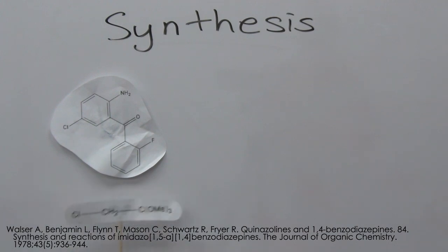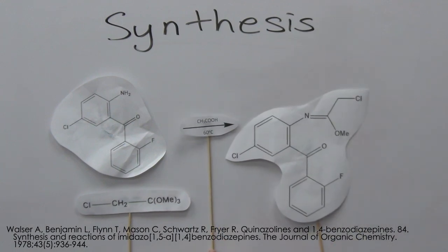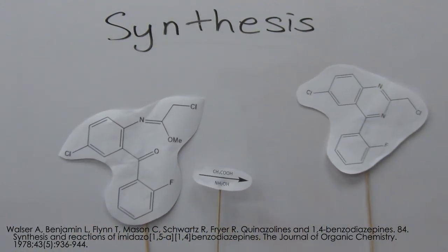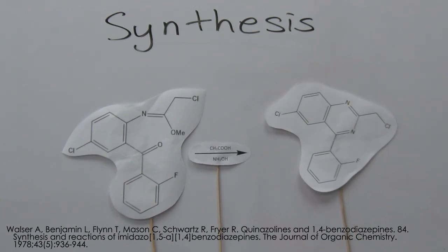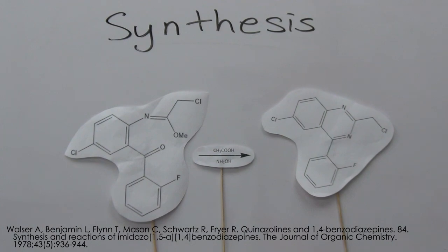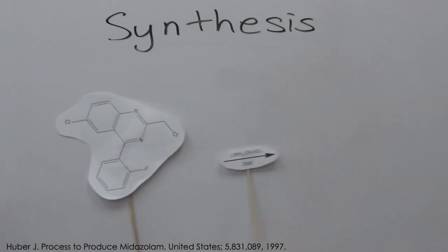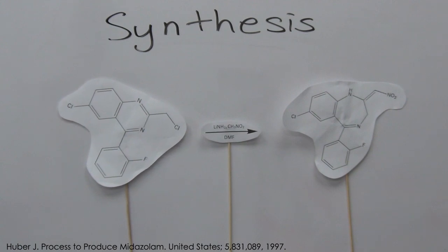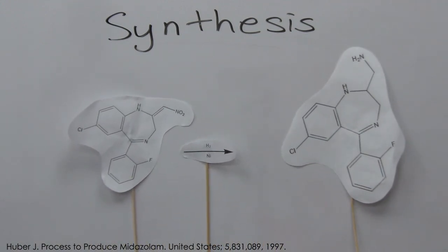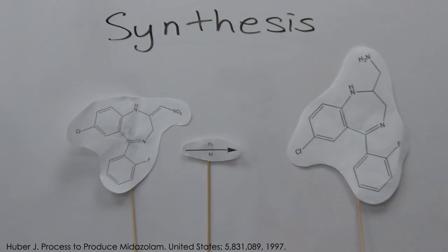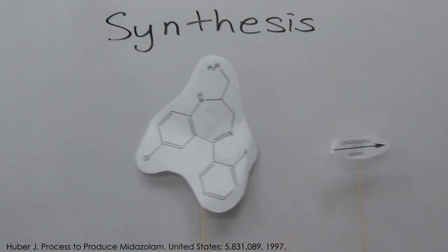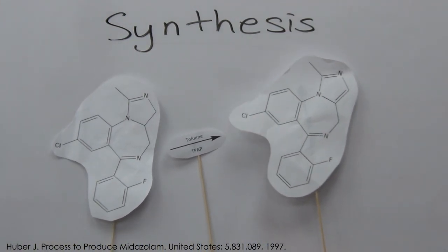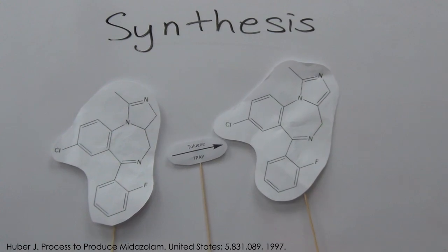Firstly, the starting compound is added to an orthoester along with a catalyst. The resulting reaction mixture is heated to 60 degrees, producing the next compound. This compound is then dissolved in methanol and cooled to 0 degrees, then reacted with hydroxylamine, which is acidified and stirred, giving another intermediate. This is then converted by addition of lithium amide and nitromethane in dimethylformamide. The new intermediate is hydrogenated using hydrogen gas with a nickel catalyst, reducing the nitro group to an amine. This primary amine was then reacted, giving the penultimate compound in crystalline form. This is then converted to the final product, midazolam, by an oxidation process using a catalyst in the presence of molecular sieves at a temperature of 30 degrees.